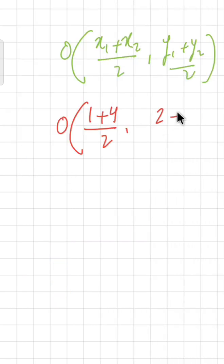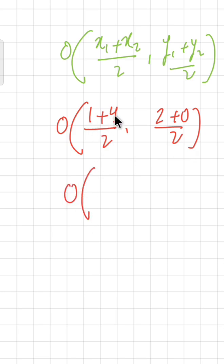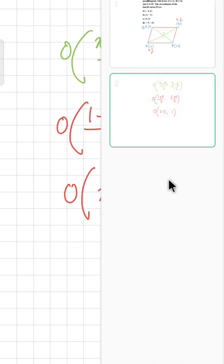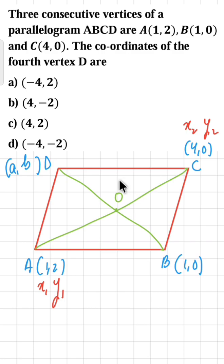For the y-coordinate: (2 + 0)/2. Solving: 1 + 4 = 5, so 5/2 = 2.5. For y: 2 + 0 = 2, so 2/2 = 1. Therefore the coordinates of O are (2.5, 1). Let's note this down — O is (2.5, 1).